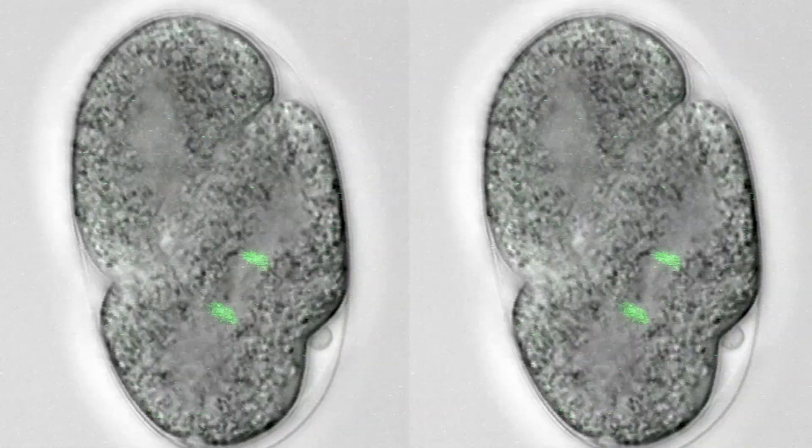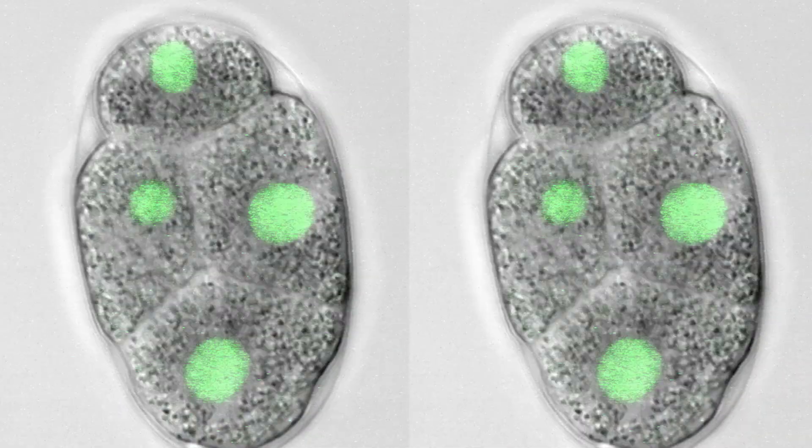We can follow every cell division from the one cell stage to the adult stage and we can then easily see what goes wrong in a mutant.